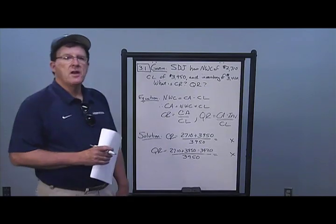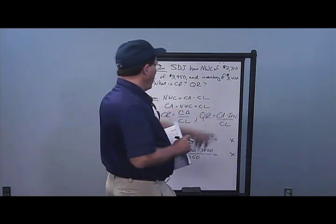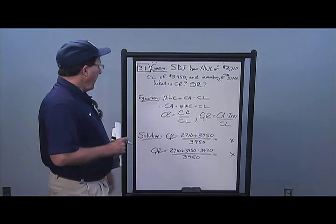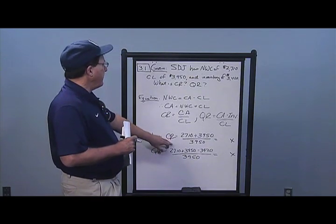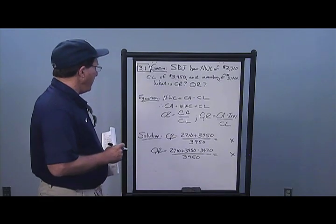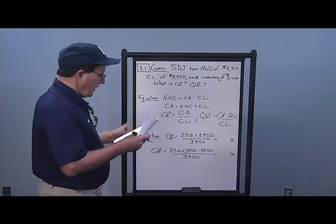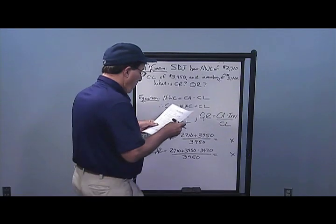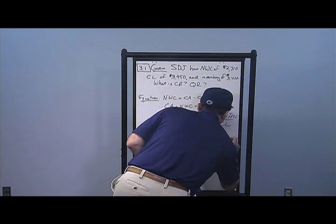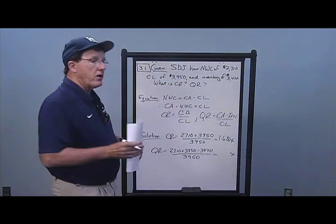Current ratio is current assets over current liabilities, and quick ratio is current assets minus inventory over current liabilities. To get current assets, I take 2710 of networking capital plus 3950 of current liabilities, then divide by current liabilities, and I get an answer of 1.686 times for the current ratio.